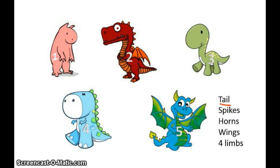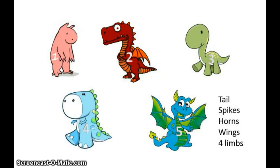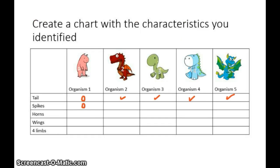So let's look at the characteristic of tail. We see it in two, three, four, and five. I probably need to create a chart to keep track of this. Organism one has no tail. Organisms two, three, four, and five have a tail. Now I'm going to look at spikes. Organism two has spikes, four has spikes, and five has spikes. We fill in our data table.